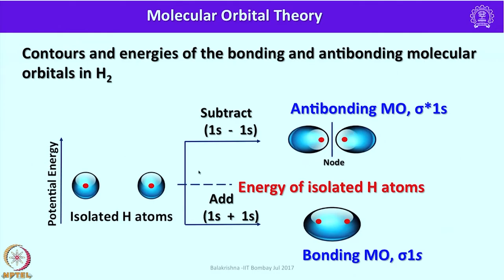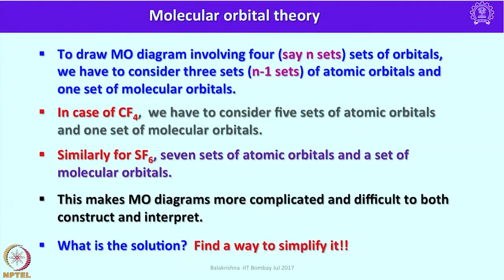When we combine two atomic orbitals, the bonding molecular orbital always has much lower energy, whereas the antibonding molecular orbital has higher energy than the atomic orbitals combined. To draw an MO diagram involving, say, four sets of orbitals, we have to consider three sets of atomic orbitals and one set of molecular orbitals. For CF4 or CH4, we consider five sets of atomic orbitals — four from fluorine atoms and one from carbon — generating one set of molecular orbitals.